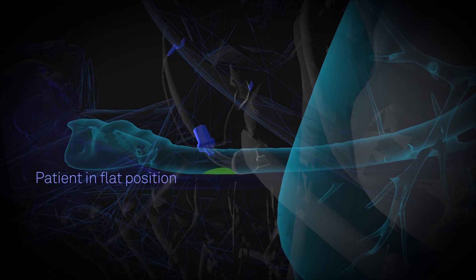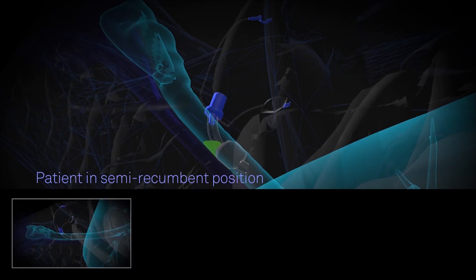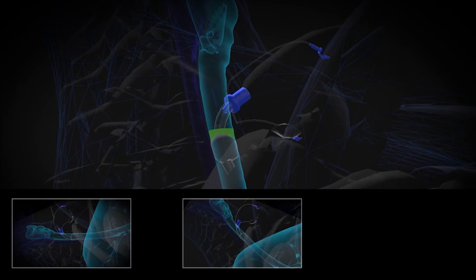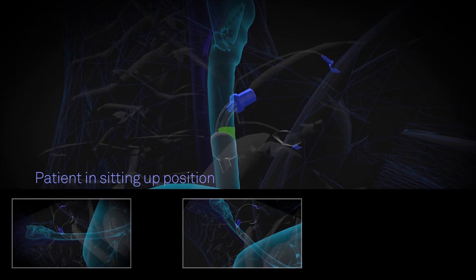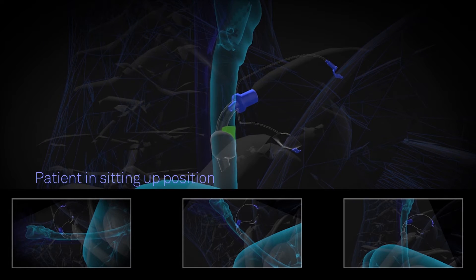Secretions accumulated above the balloon cuff can shift depending on the patient's position: flat, semi-recumbent, or sitting up. The location of the suction hole above the balloon cuff can impact the amount of secretions aspirated.